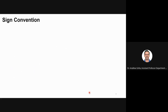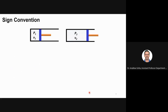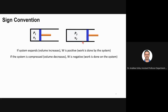Let us define sign conventions — what we take as positive and negative. The initial condition is P1, V1 where V1 is less than V2, and then the gas expands to P2, V2. The sign convention we will use is: if a system expands, volume is increasing, then work done is positive — this is work done by the system. Similarly, if the system is compressed and I decrease the volume, work done will be negative, or work is done on the system.